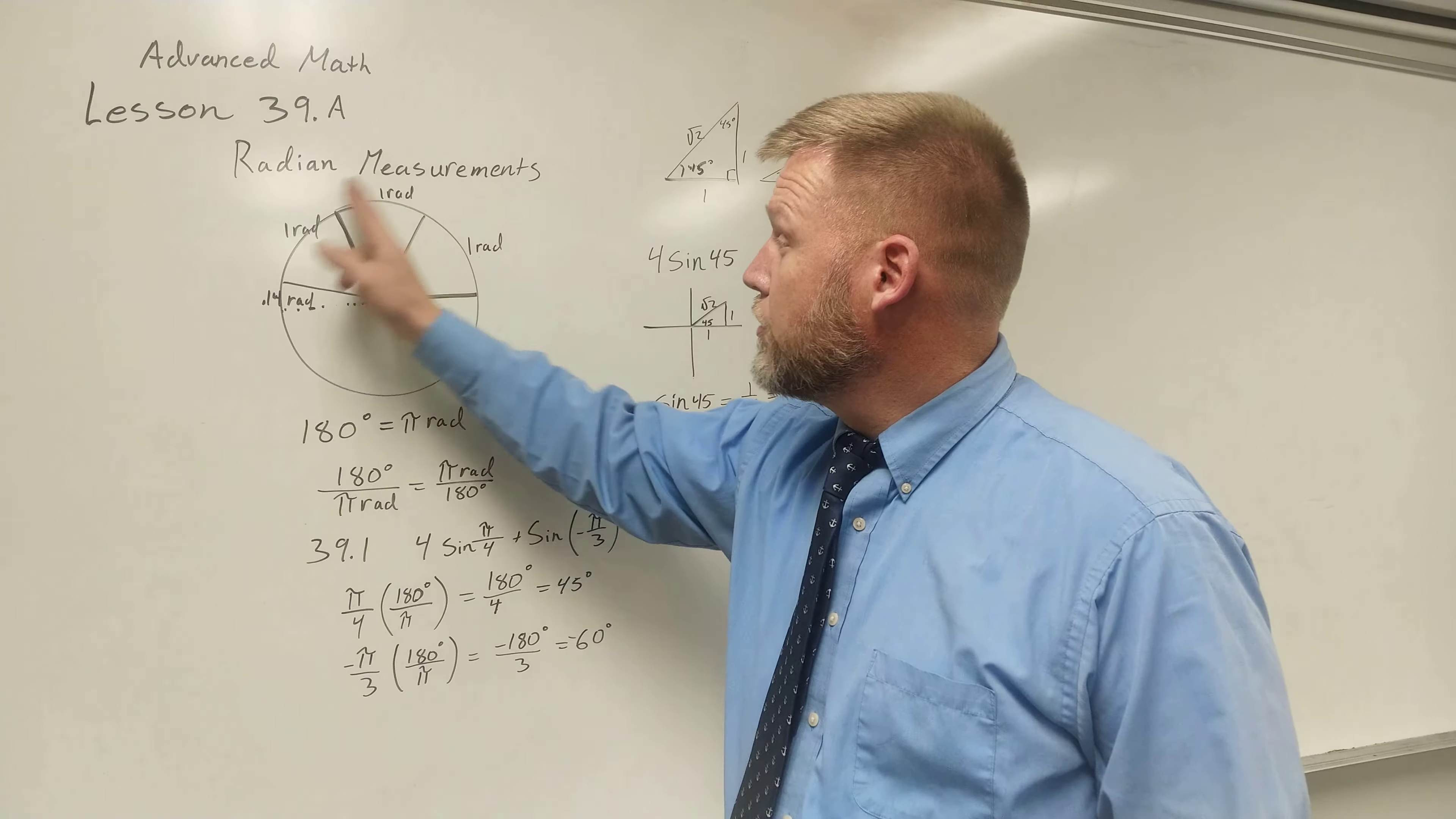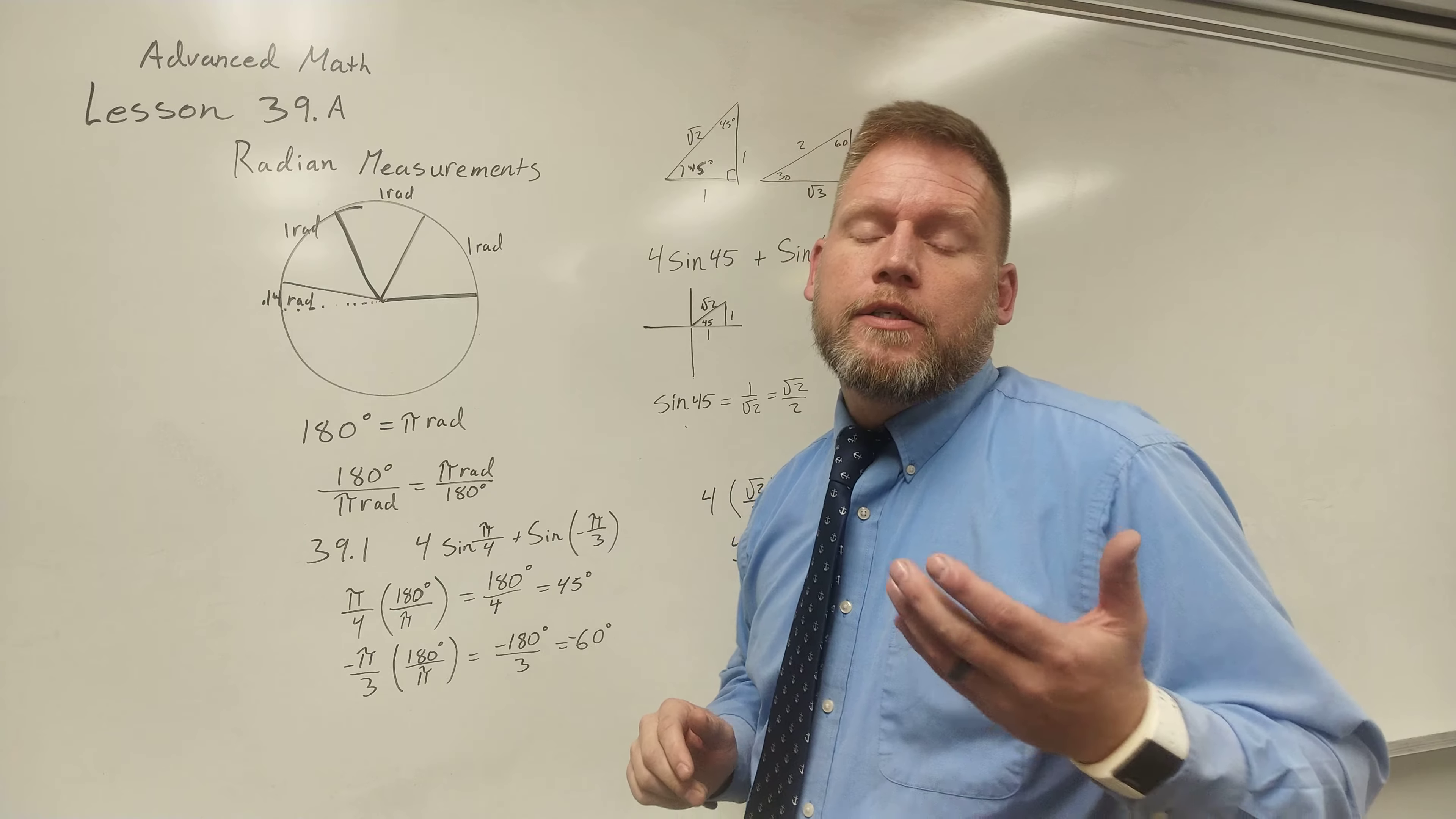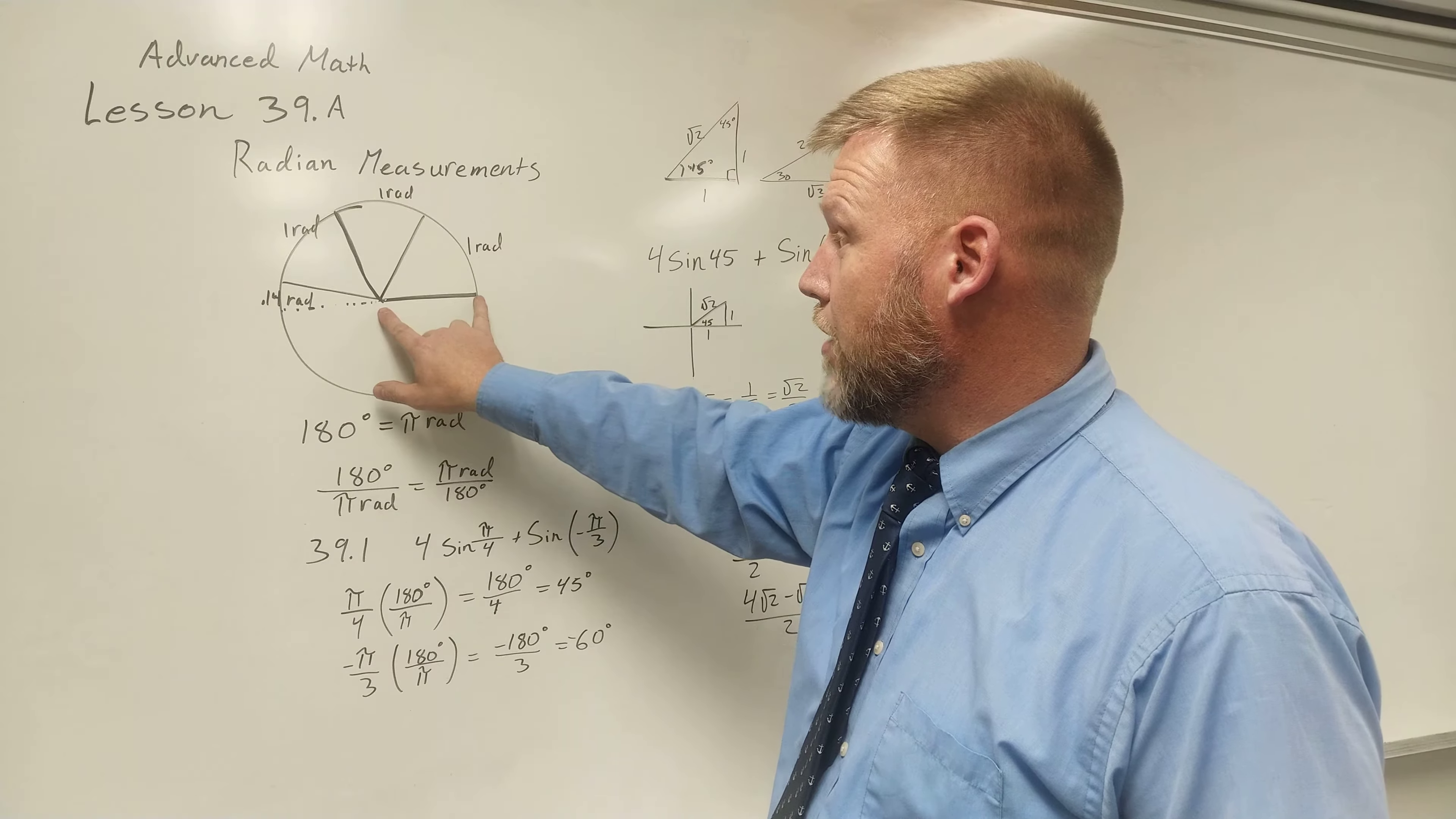We already know that a complete circle all the way around is 360 degrees, but I have to stop and define what is a radius. Well, radius is the distance from the center to the outside.